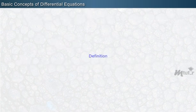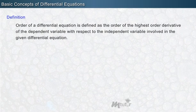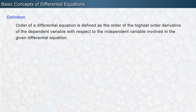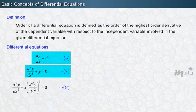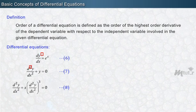Next, let us learn the definition of the order of a differential equation. The order of a differential equation is defined as the order of the highest order derivative of the dependent variable with respect to the independent variable involved in the given differential equation. For example, equations 6, 7, and 8 involve the highest derivative of first, second, and third orders respectively. Therefore, the order of these equations are 1, 2, and 3 respectively.